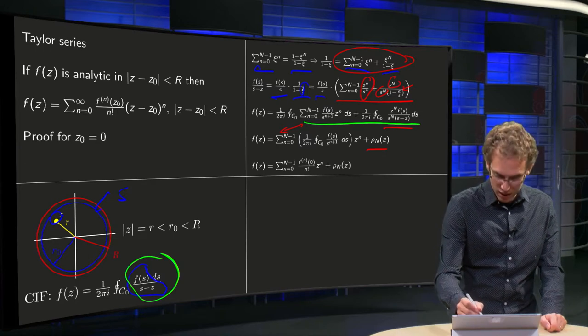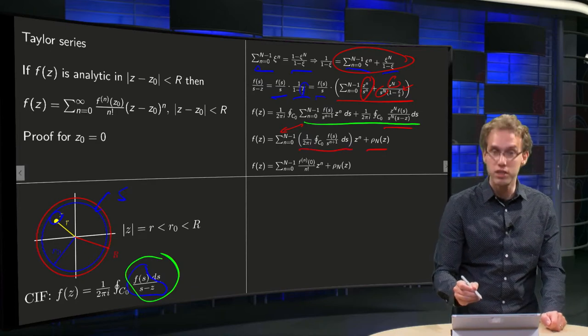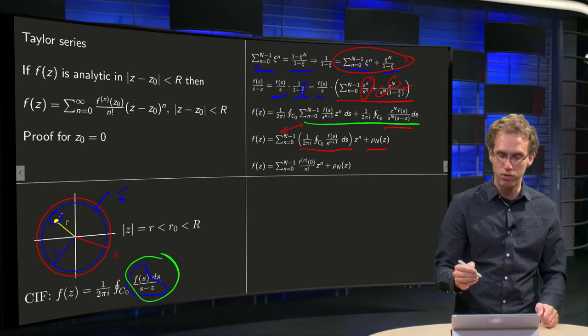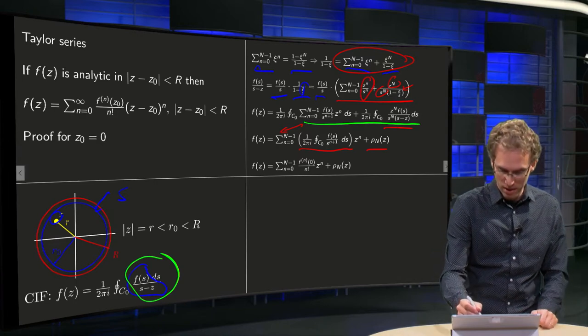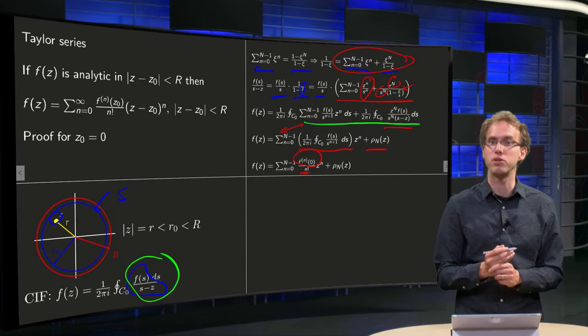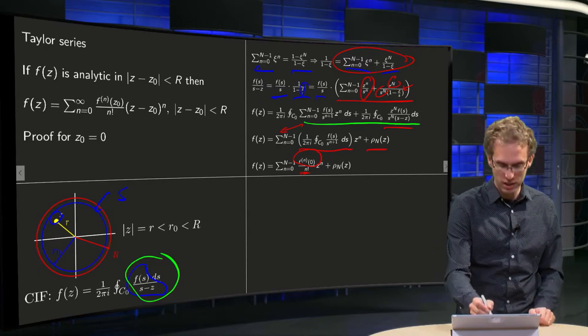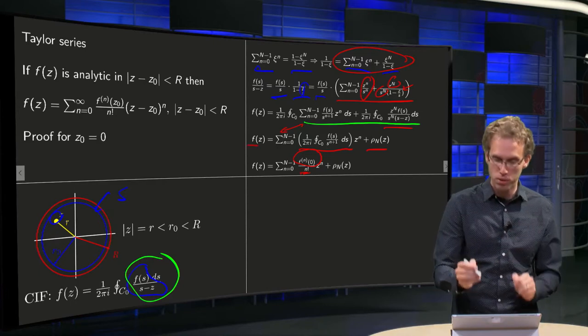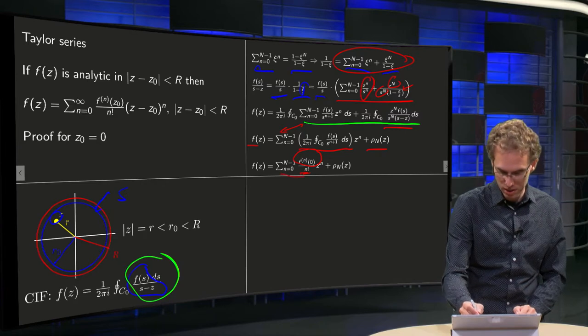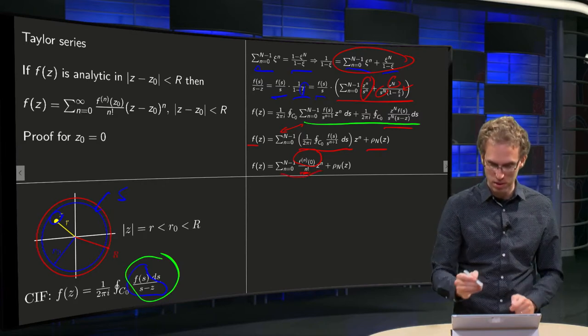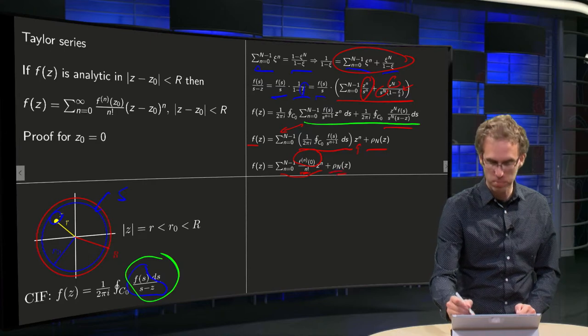Because now we recognize that this part here is just again Cauchy's integral formula, but now the nth derivative in zero divided by n factorial. So our f of z equals some power series in z to the power n, coming from here, plus some remainder.